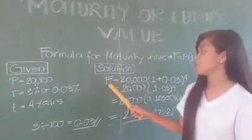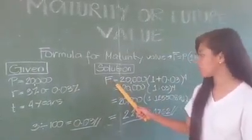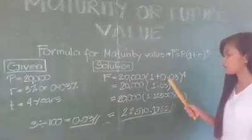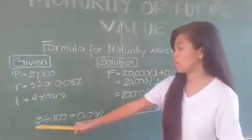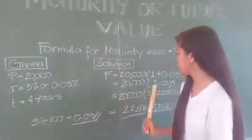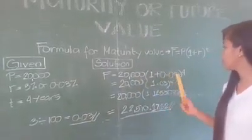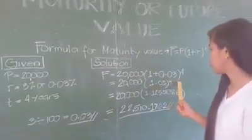The solution. Future value is equal to 20,000 multiplied by 1 plus 0.03 raised to 4. Why 0.03? Because we divide 3 by 100. Then, 1 plus 0.03 is equal to 1.03 raised to 4.